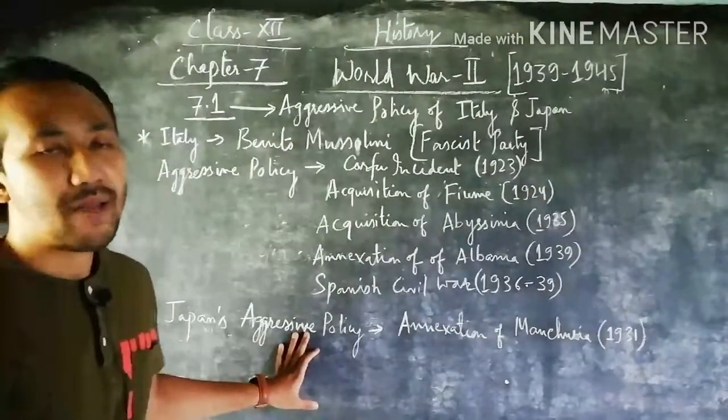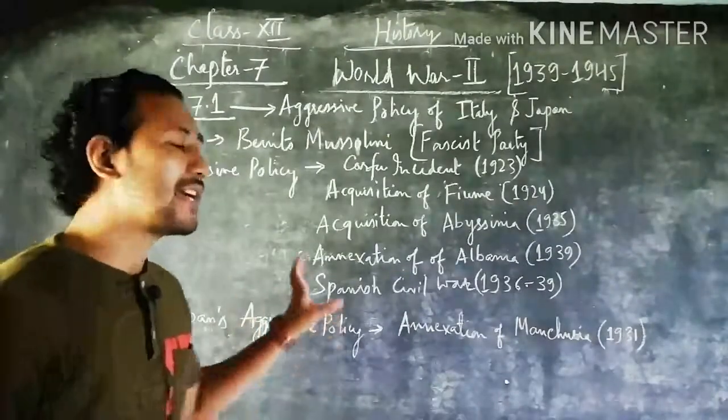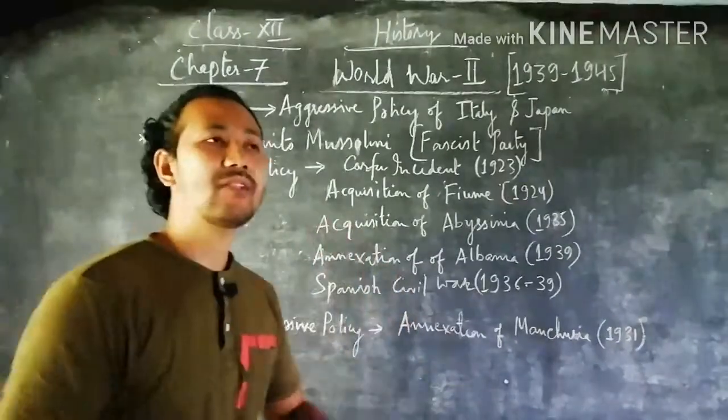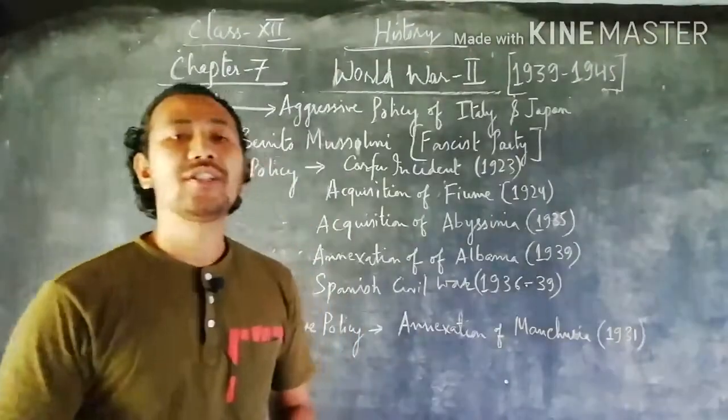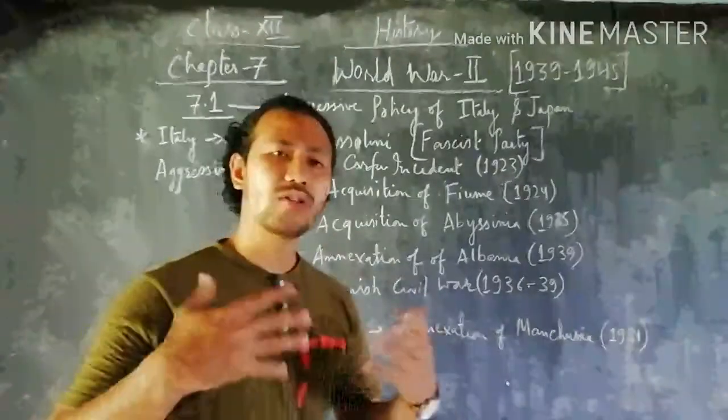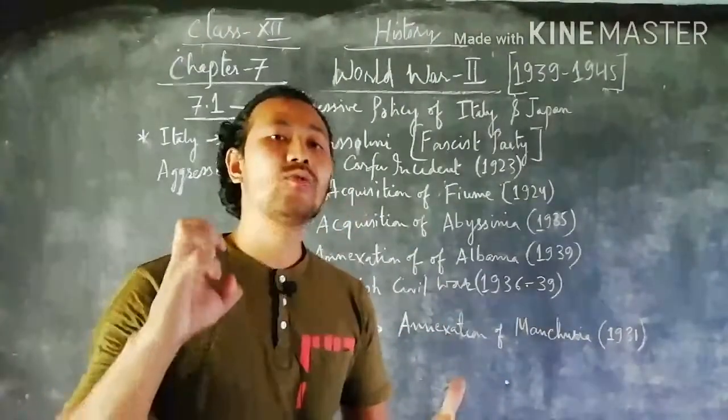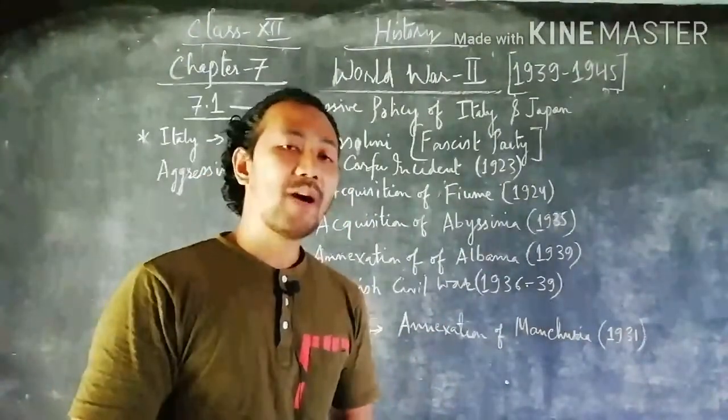Japan's aggressive policy was focused on their neighboring Asian country known as China. During that time, China had lots of natural resources and raw materials which were very attractive to Japan.